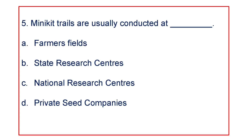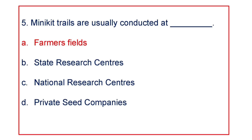Coming to the next question: Minikit trials are usually conducted at A. Farmers fields, B. State research centers, C. National research centers, or D. Private seed companies. The answer is Farmers fields.